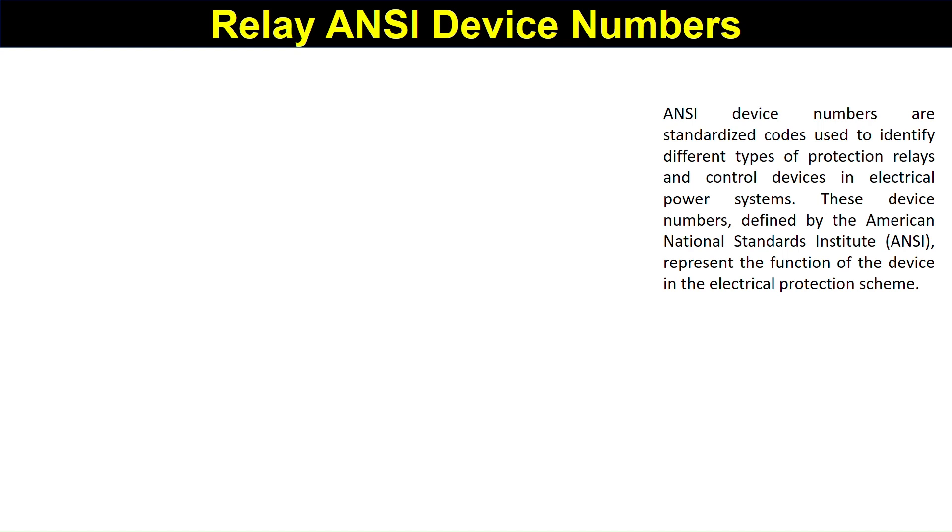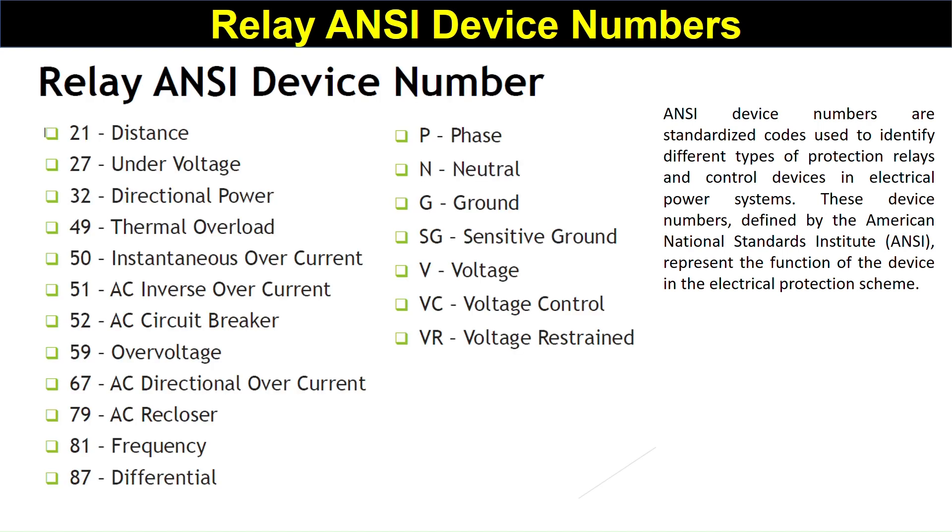Now what are the various ANSI numbers for different relays? ANSI 21 for distance relay, ANSI 27, ANSI 32 for differential, power thermal overload 49, thermal overload and 50 for instantaneous. These are the different ANSI numbers. Thank you.